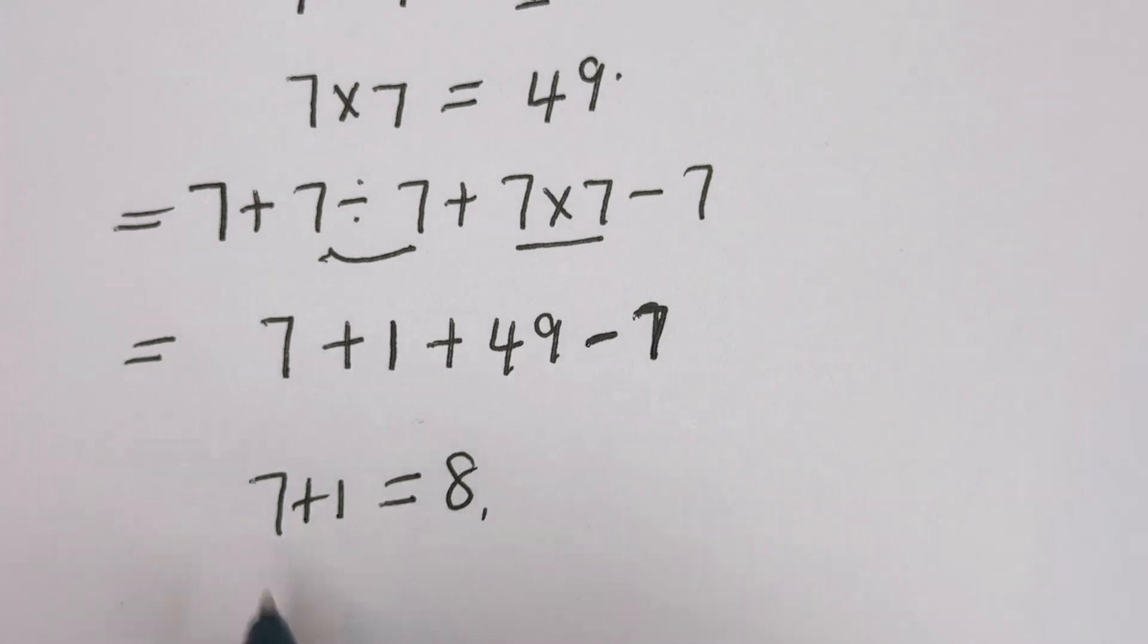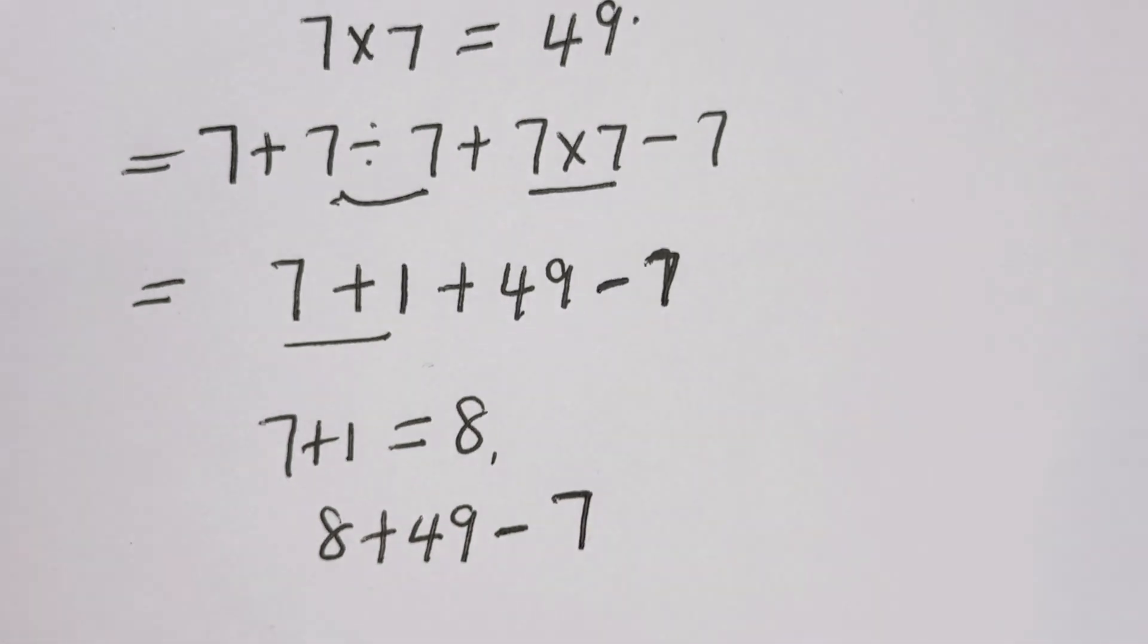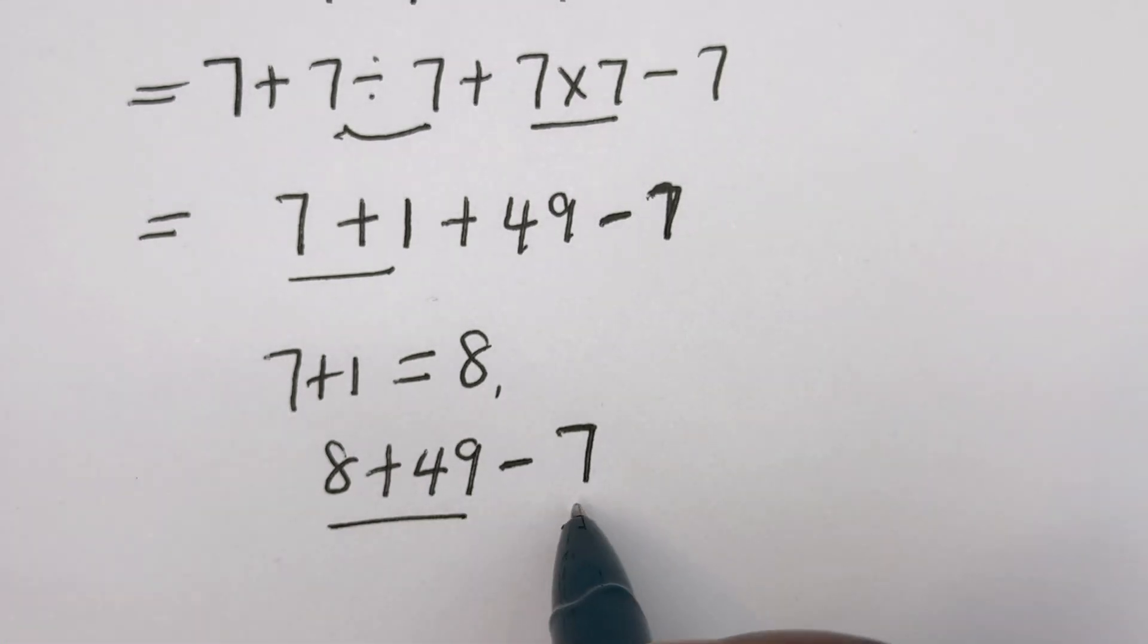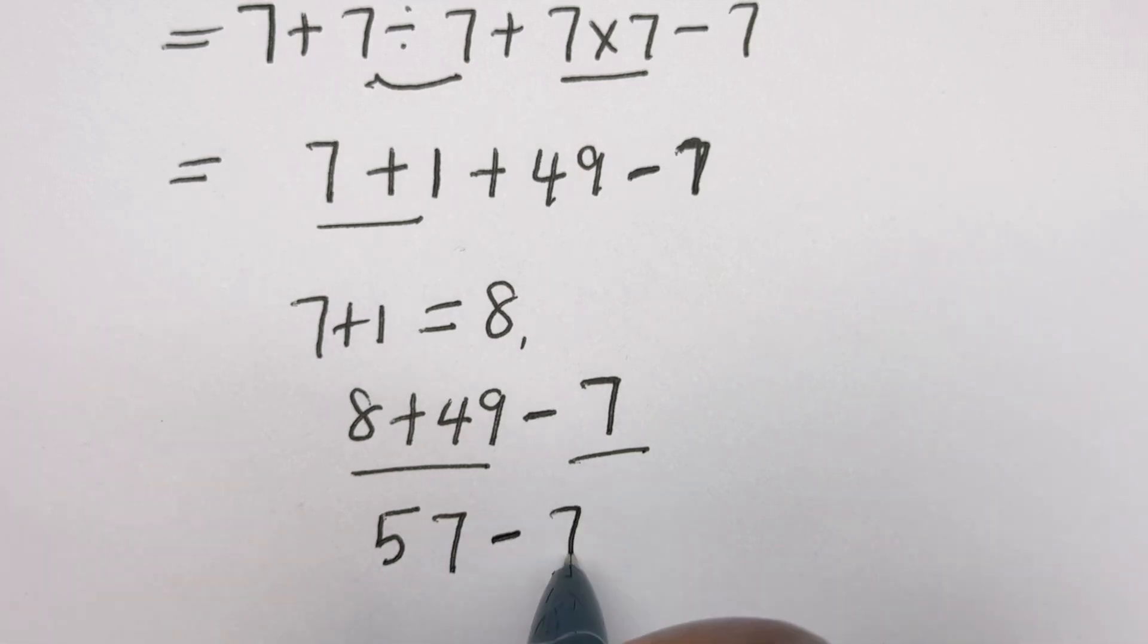Then we have 8 + 49 - 7. We have the addition and subtraction: 8 + 49 = 57 - 7.